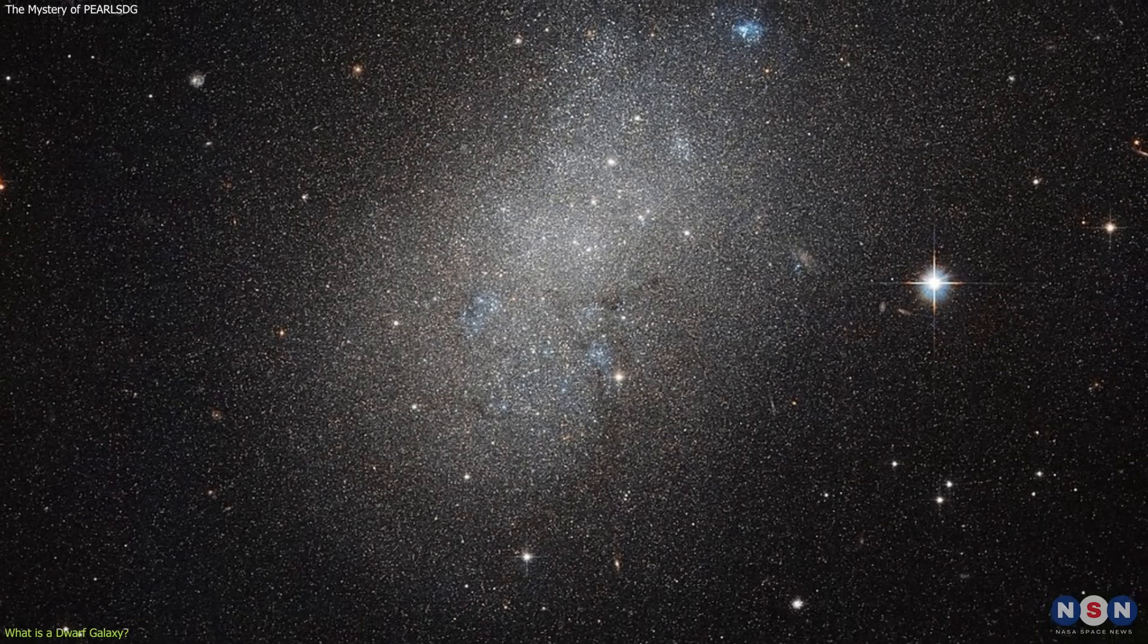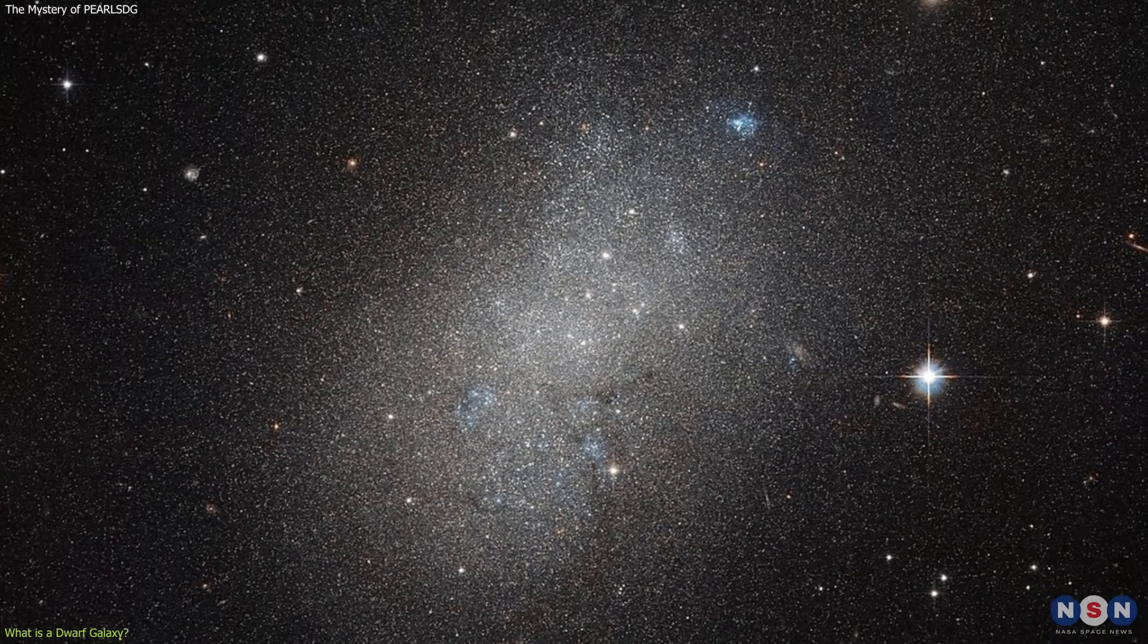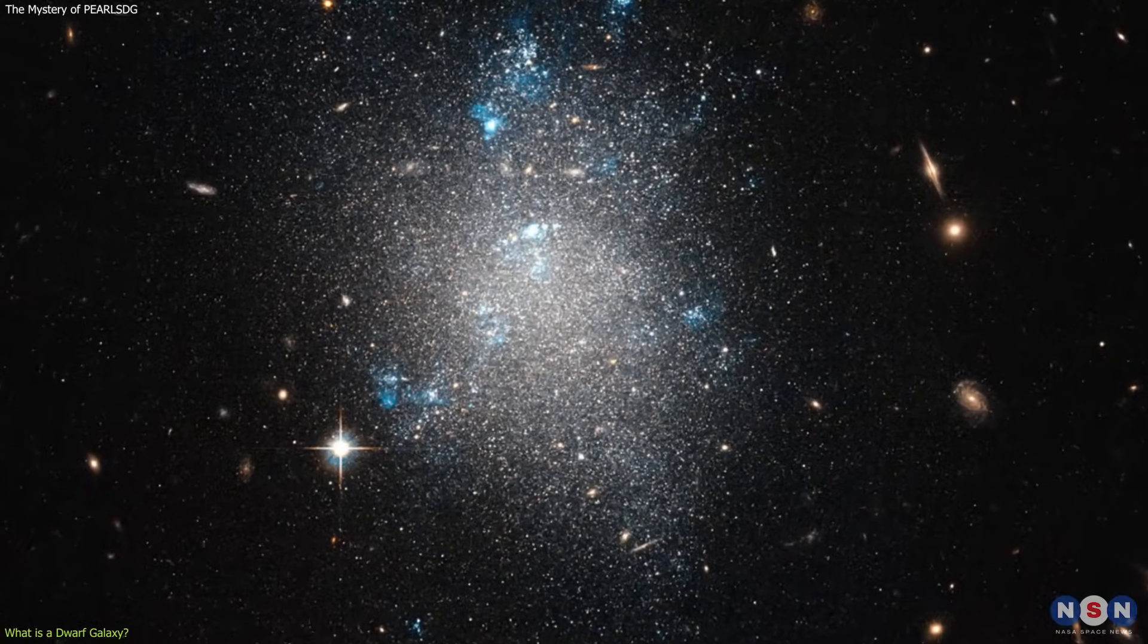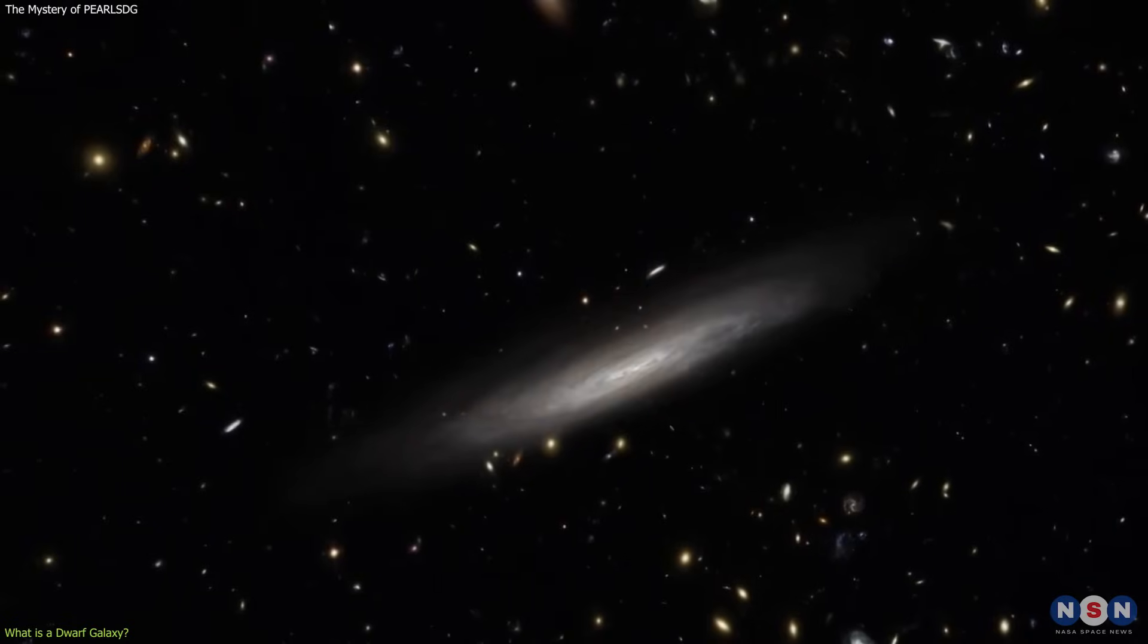Less massive, and less structured than larger galaxies. They often have irregular shapes and lack a clear spiral or elliptical structure.